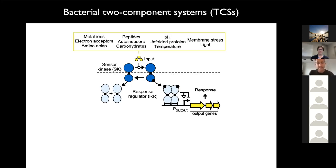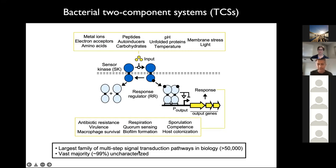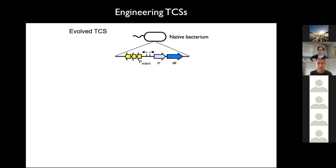We've been particularly interested in two-component systems because they sense a lot of stuff — metal ions, small molecules, macromolecules, membrane stress, light, and a wide range of other things. Their sensor domains are remarkably evolutionarily diversified. They're also important in microbiology because they control bacterial behaviors like antibiotic resistance, virulence, macrophage survival, and respiration. They're the largest family of signal transduction pathways in biology, and the vast majority are completely uncharacterized — meaning we don't know the input or output.